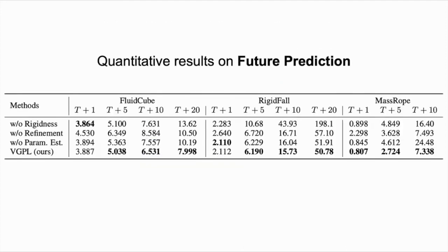Finally, we show the mean squared error between the future prediction of the particle positions and the ground truth on all environments. As shown in the table, with better and more thorough estimation of the physical properties, we can predict the future positions more accurately, especially when making long-term predictions.